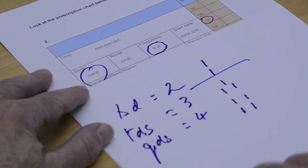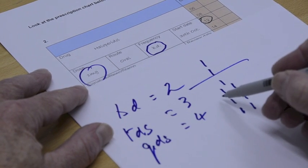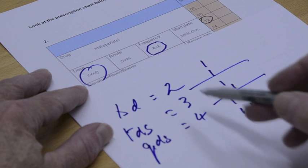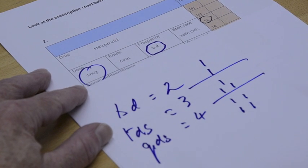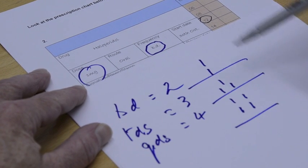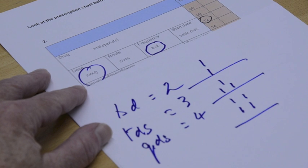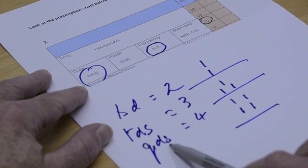So, BD, two, sorry, dropped my pen. TDS, three wheels, three times a day, in other words. And quad bike, four. So, two, three, four times a day. So that's what those initials here mean.